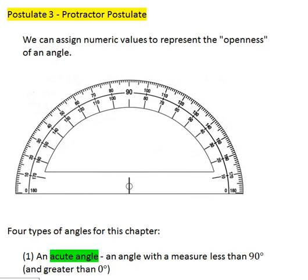The first postulate we have to do with angles is postulate 3 in our text, and it's called the protractor postulate.